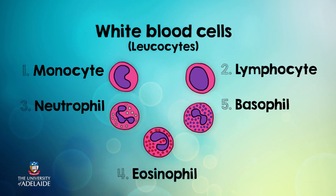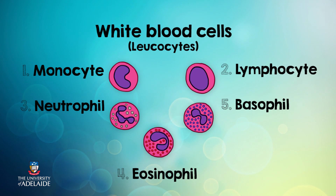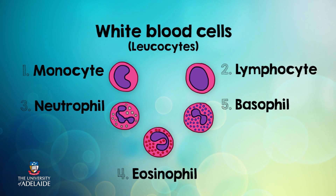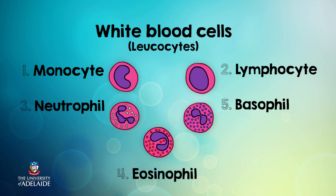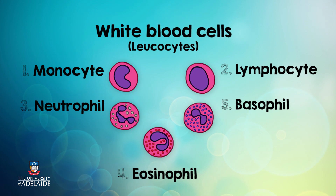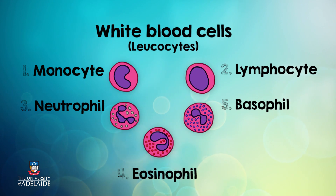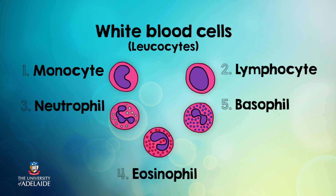Monocytes are phagocytic formed elements, which means they are big cell eaters. They can engulf pathogens such as bacteria and destroy them. Lymphocytes play a very large part in defending our body. They usually leave the bloodstream to take up residence in our tissues and lymph glands.